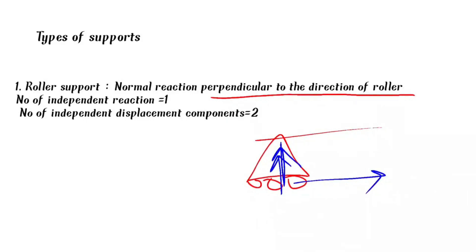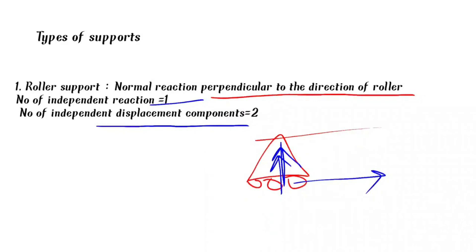The number of independent reactions for a roller support is one. The number of independent displacement components — degree of freedom — includes horizontal movement, and the number of displacement components is two.